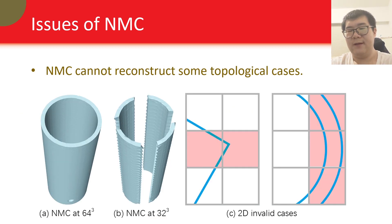Second, NMC cannot reconstruct some topological cases by design, which also happens to classical marching cubes. For example, when you have two intersection points on an edge, that constitutes an invalid cube, and cannot be represented by NMC. And it leads to artifacts as shown here.